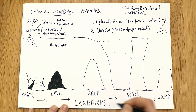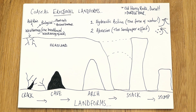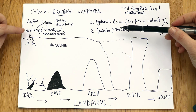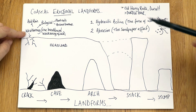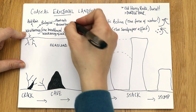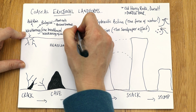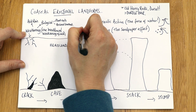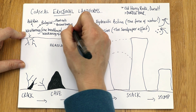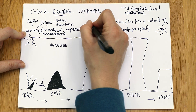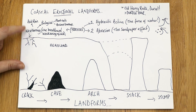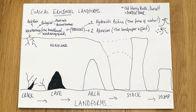So there you have it — your five different landforms, and your two types of erosion and weathering processes. Best of luck with that one.